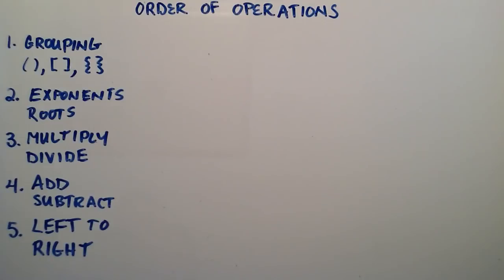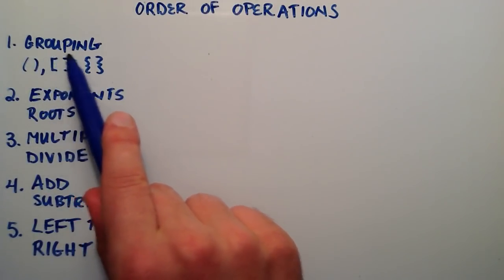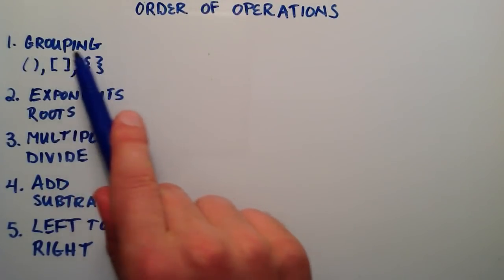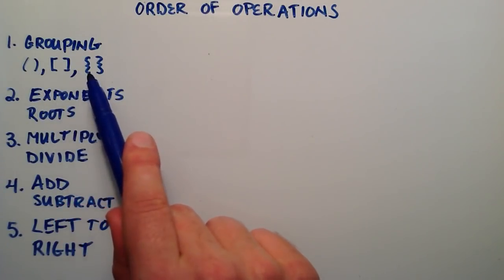When we have an algebraic expression to evaluate, it's important to know what order to solve an expression in. The first thing we want to do in solving an algebraic expression is solve all the math in the grouping mechanisms. Common grouping mechanisms are parentheses, brackets, and curly braces.